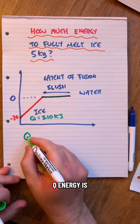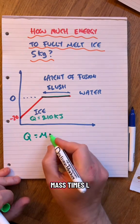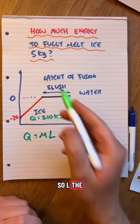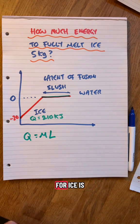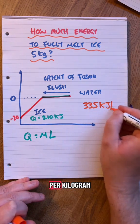Here's the formula. Q, the energy, is going to be M, the mass, times L. ML - my name is Morgan Lewis, isn't that funny? So L, the latent heat of fusion for ice, is 335 kilojoules per kilogram.